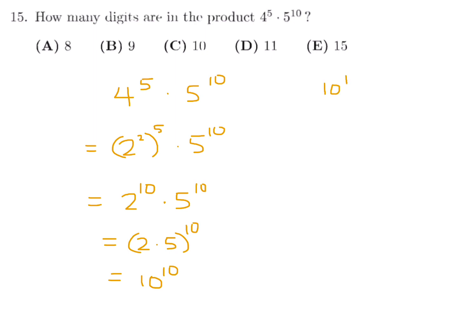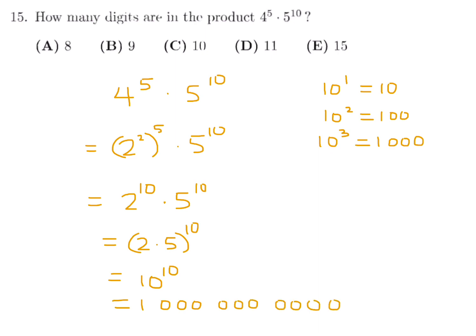10^1 = 10, 10^2 is 1 followed by 2 zeros, 10^3 is 1 followed by 3 zeros, and so on. So 10^10 is 1 followed by 10 zeros, which has 11 digits total. Number 15, answer D.